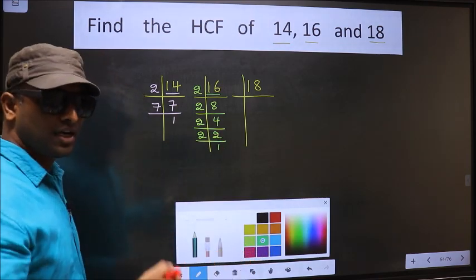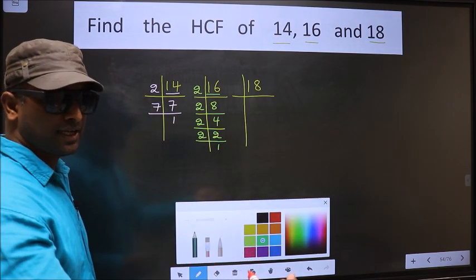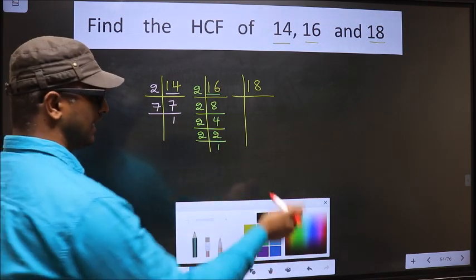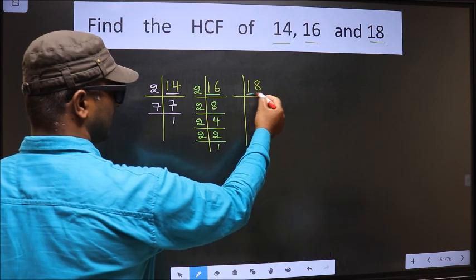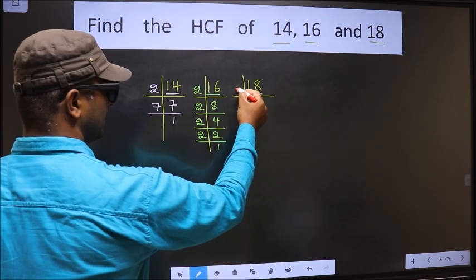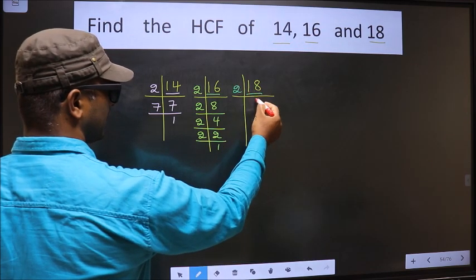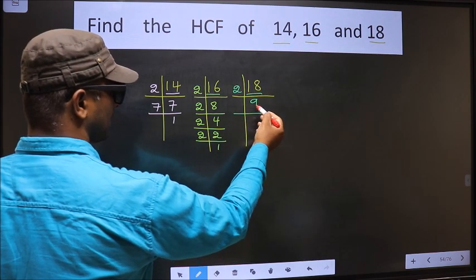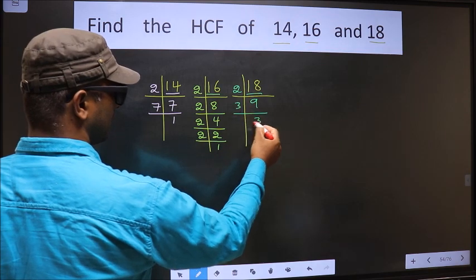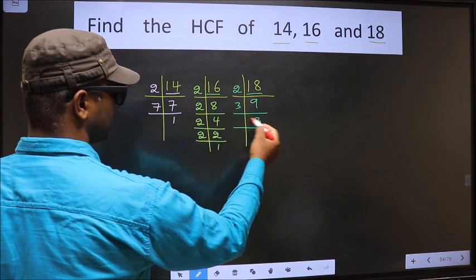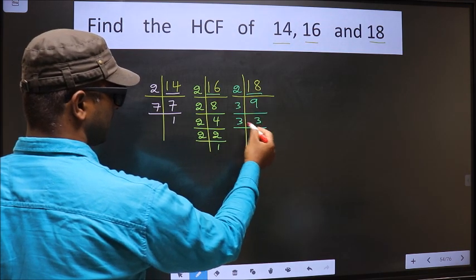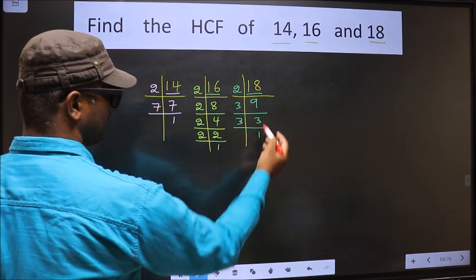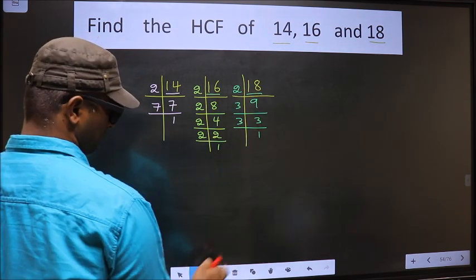The next number is 18. 18 is 2 times 9. 9 is 3 times 3. Now we have 3, which is a prime number, so 3 times 1 is 3.